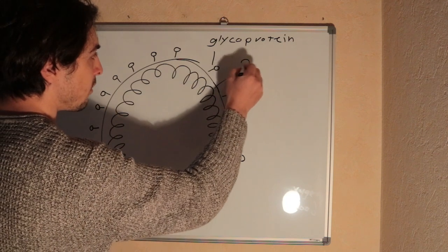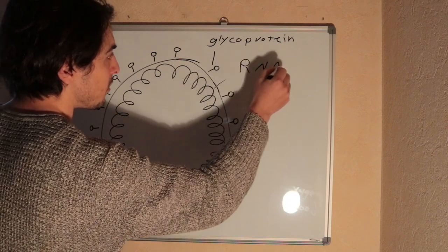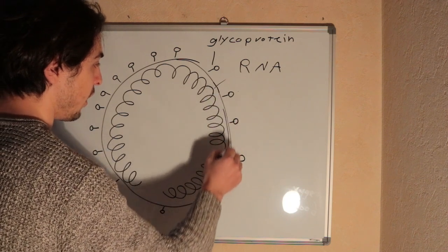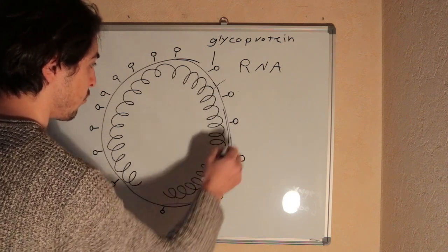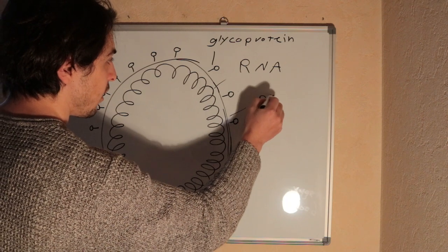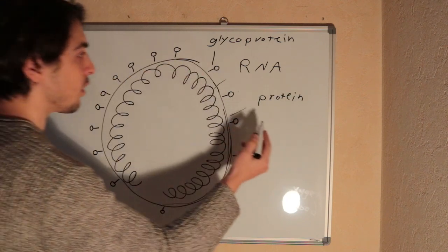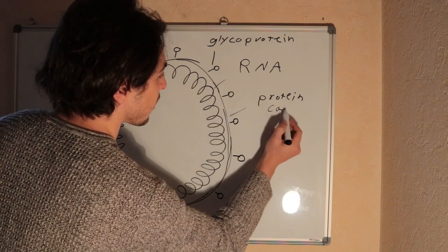This is the RNA material. And here we have the protein envelope, the protein capsid. It's like a shell.